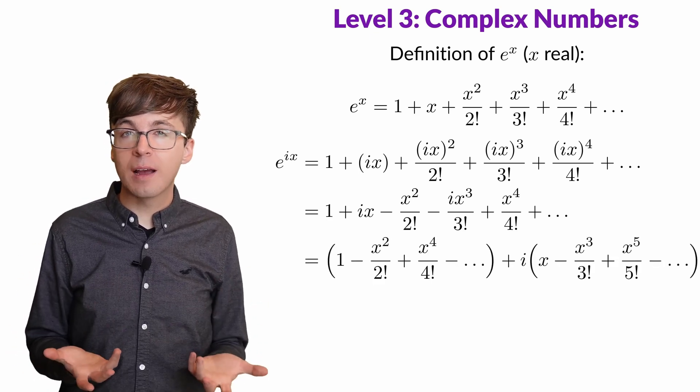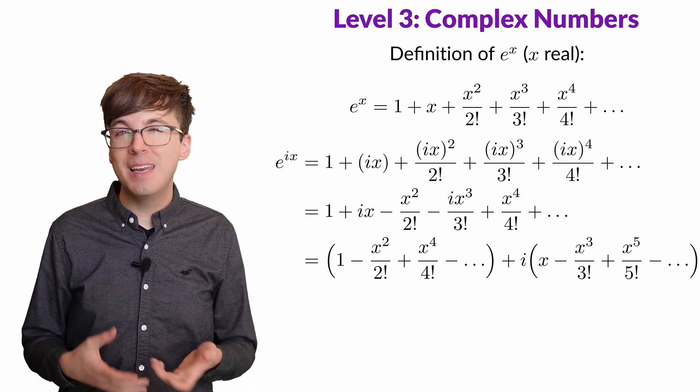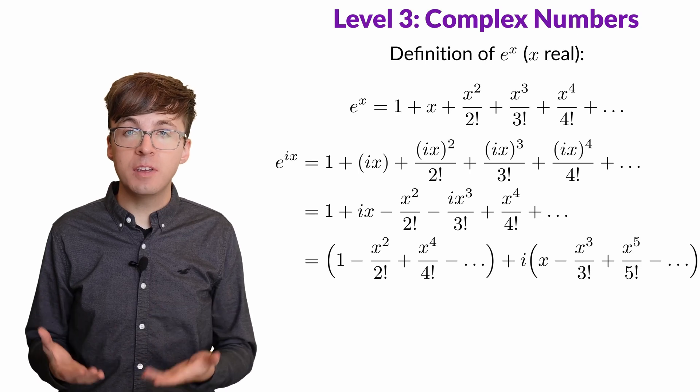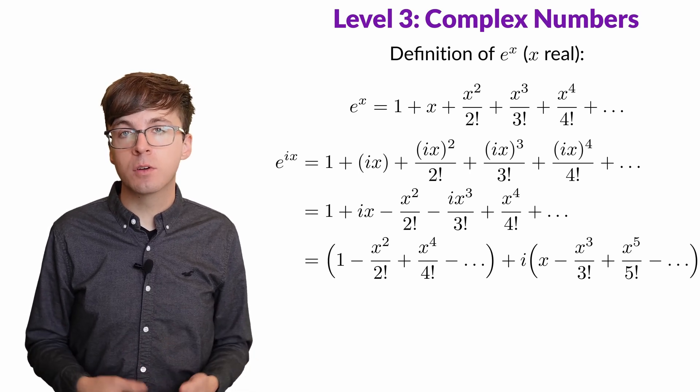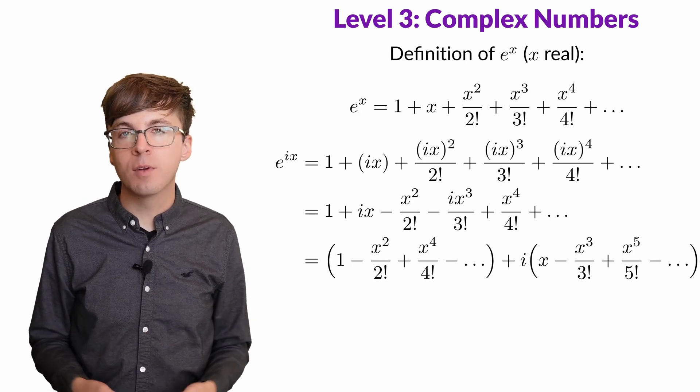We can separate the terms without an i from the terms with an i to get this. To be allowed to move terms around in an infinite series, the series must be absolutely convergent, meaning even if we take the absolute value of each term, the series will still converge. This series is absolutely convergent, so we're okay to rearrange terms.